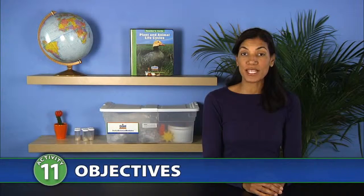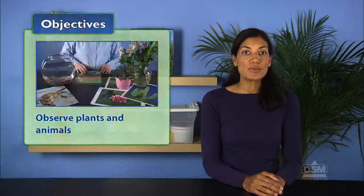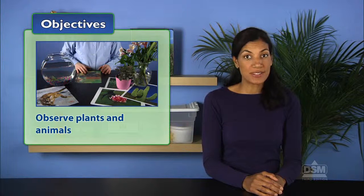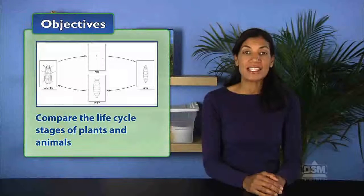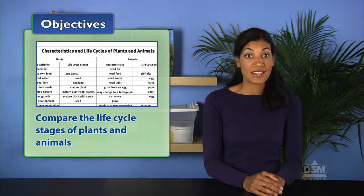In Activity 11, Plants and Animals, students observe plants and animals. Students then compare the life cycle stages of plants and animals by listing the identifying characteristics of each.